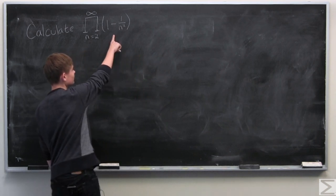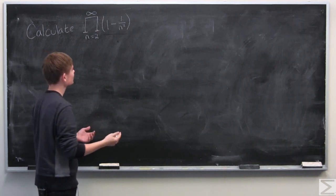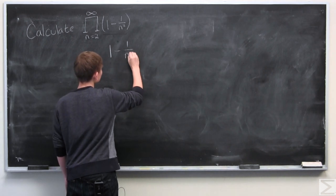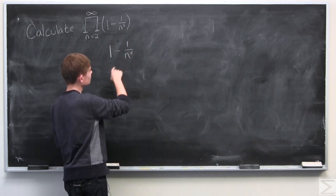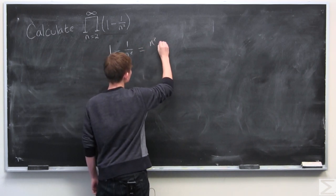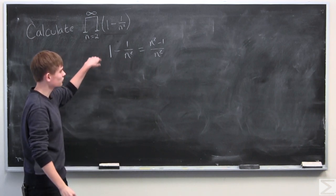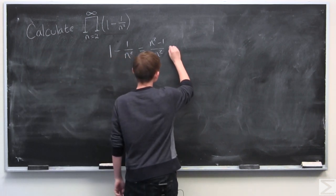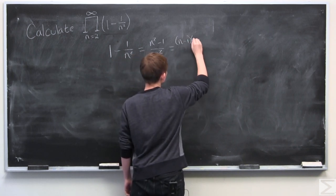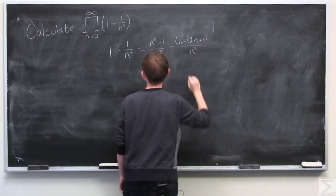First thing we're going to do is look at what we're actually producting. That's not the correct verb but we'll use it. So if we look at 1 over n squared we can simplify this into one fraction which is n squared minus 1 over n squared, and we can factorize this numerator and get n minus 1 times n plus 1 over n squared.